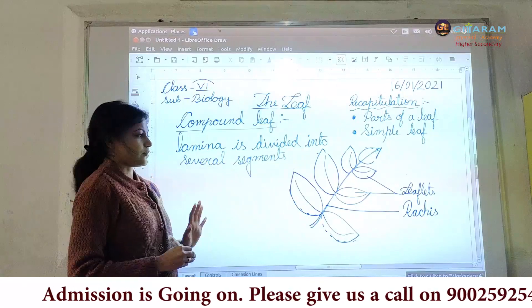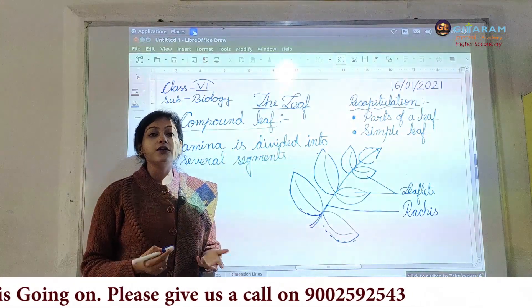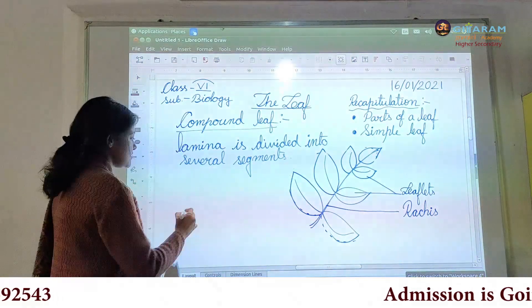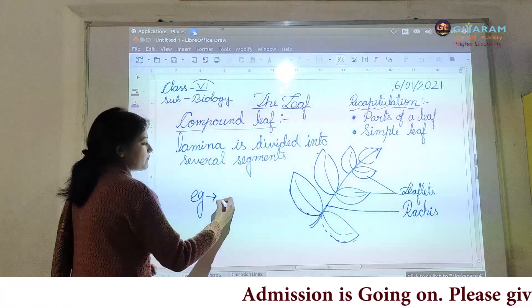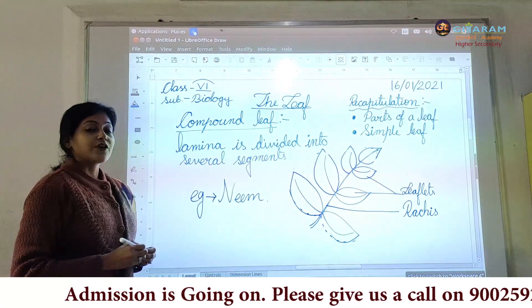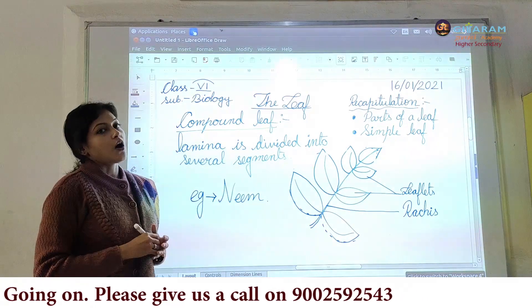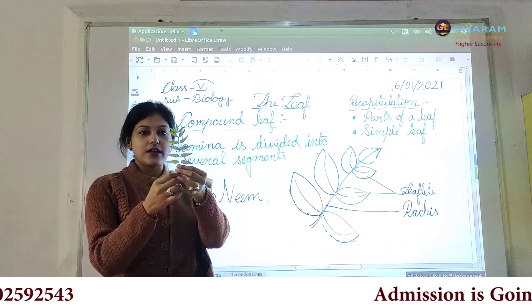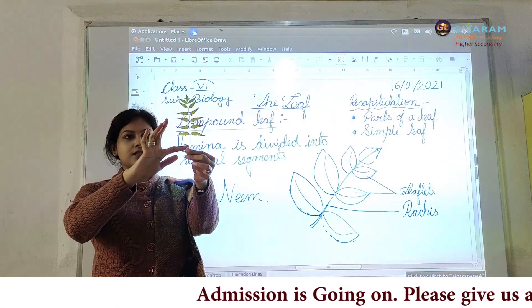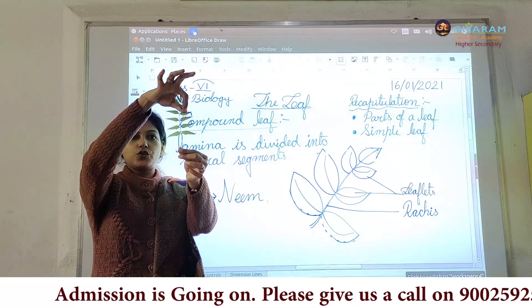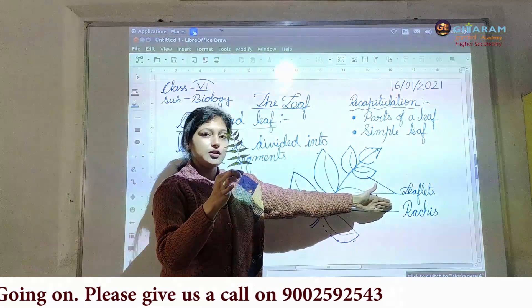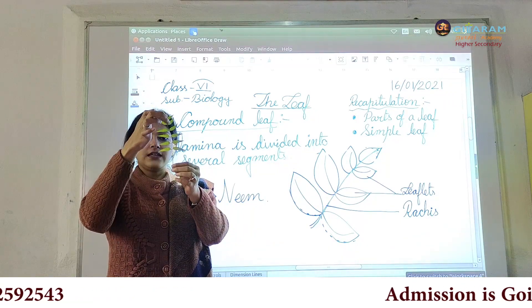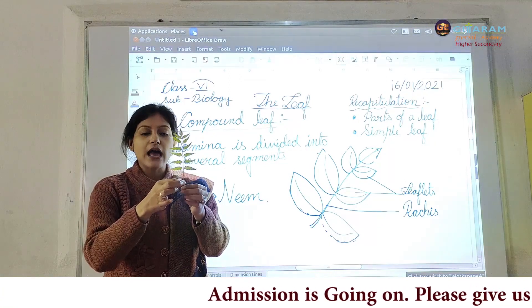Now the question is: what are the examples, or in which plants can a compound leaf be seen? A very common example of a tree found surrounding us where we can see compound leaves is neem. Here I am showing you how the compound leaf of a neem tree looks like. See — this is the compound leaf; the whole structure is the compound leaf. The leaf-like parts are not actually leaves — these are leaflets, as I have shown you. Each leaf-like structure is called a leaflet. And what is the name of this mid-rib? Here it will be called rachis.